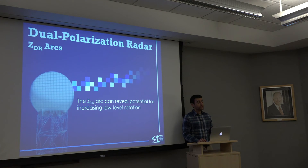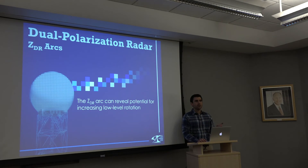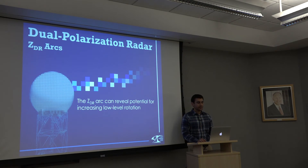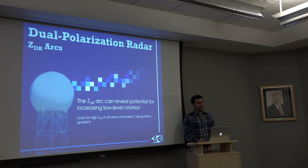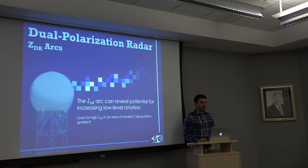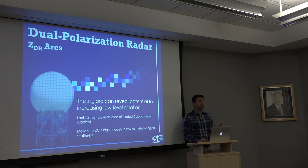So ZDR arcs — what do they reveal? A potential for increasing low-level rotation. I'll stress it doesn't explicitly predict tornado genesis; we can't say a strong ZDR arc means a tornado will form. It's just telling us something about our low-level and even mid-level storm-relative helicity — an increasing potential for rotation. We want to look for high ZDR in an area of modest reflectivity along that inflow gradient. We also want to make sure correlation coefficient is high enough — values of 0.8 to 0.9, especially above 0.9 — to trust that we're dealing with meteorological scatterers like raindrops. And with that, we'll wrap up this session on ZDR arcs.